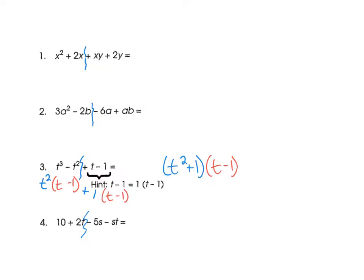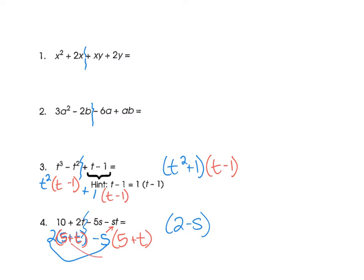Number 4 — negative 5s minus st: factor out negative s to get positive 5 plus t. My answer for number 4 is 2 minus s in parentheses times 5 plus t. Remember, your answers will always be two parentheses for factoring by grouping — even for homework tonight. Ask the sub for help; he definitely knows what he's doing. Alright, great job you guys!